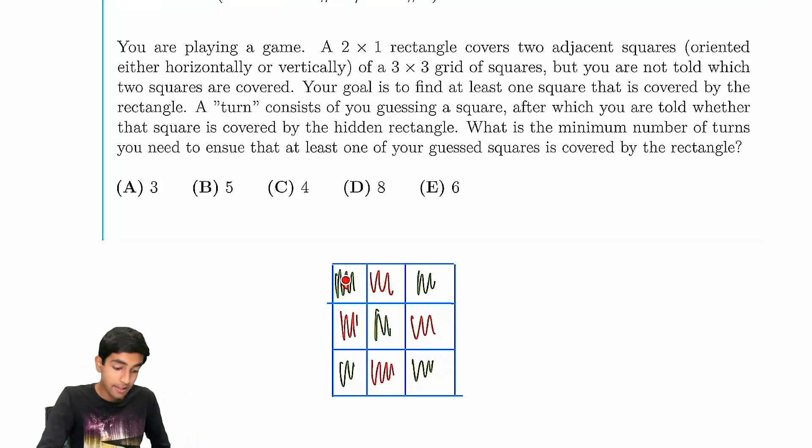So we can either guess every single green square, and we're guaranteed to find a square occupied by the domino, or we can guess every single red square, and we're guaranteed to find a square occupied by the domino.